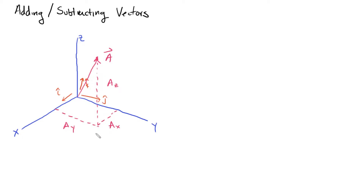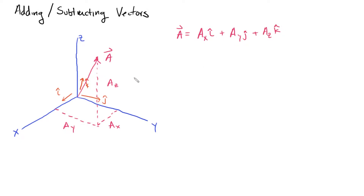Now that we know the lengths of the projections in each direction, we can rewrite vector a in this new notation. So vector a is equal to ax·i-hat plus ay·j-hat plus az·k-hat. We can now write vectors in a very algebraic sense — three terms corresponding to three different directions that define a vector in three dimensions.